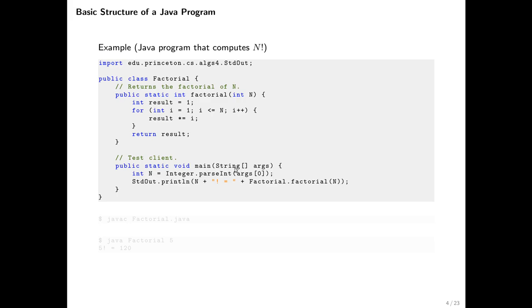This method main with this particular signature has a very special status — it is called the entry point method in Java. When we run this program, it's this method that is invoked first. Whenever you run a Java program, the JVM goes looking for a method that has exactly the signature public static void main with a parameter that is an array of strings, and if it finds one, that's the method it's going to kick off.